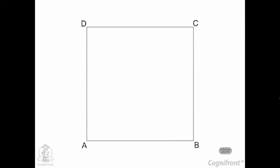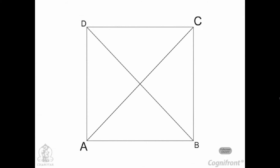We'll draw the diagonals AC and BD intersecting each other at O. Then with A as center and AO as radius, draw an arc cutting edges AB and AD at points 2 and 7 respectively.